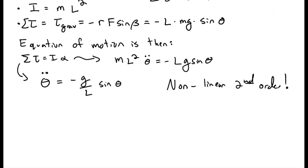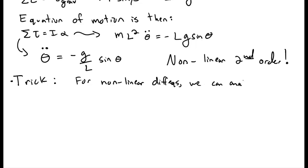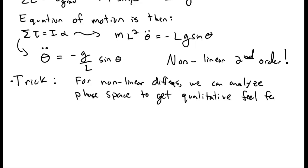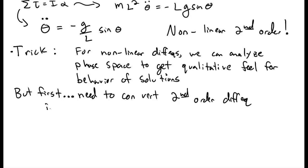We don't have a whole lot of tricks to solve this directly. A new trick we can use to understand what solutions look like is to analyze the phase space of solutions to this differential equation for nonlinear systems. That gives us a qualitative feel for the behavior, even if we can't exactly solve the equations. This involves first converting our second-order differential equation to a pair of first-order coupled differential equations in order to look at phase space.